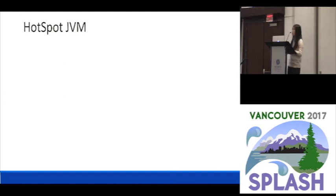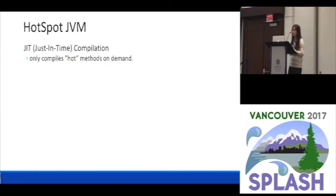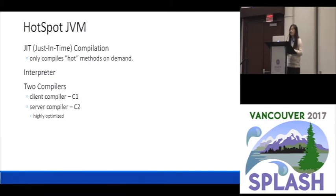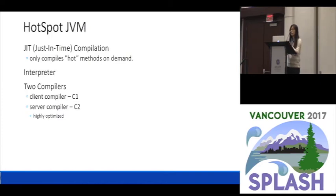We built VBD HotSpot based on HotSpot JVM. HotSpot JVM uses JIT compilation, which means that by default all methods will be executed by the interpreter. If the methods are hot enough, they will be compiled. HotSpot JVM has one interpreter and two compilers — one client compiler and one server compiler. The client compiler has a faster startup time, but the server compiler is more optimized. Because our focus is on server applications, in our implementation we only use the interpreter and the server compiler.